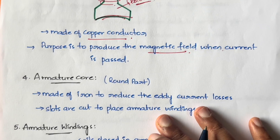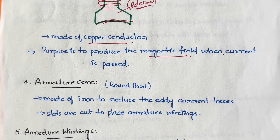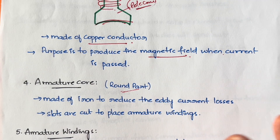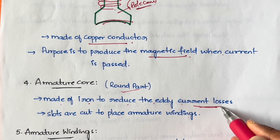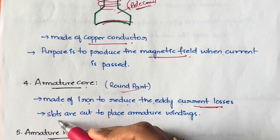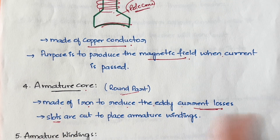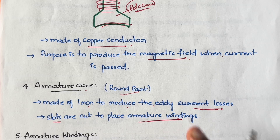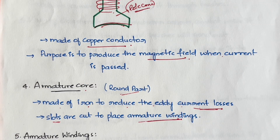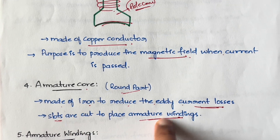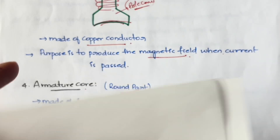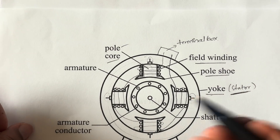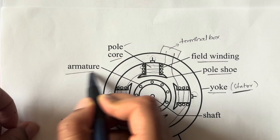Now let's see the center parts — the rotor parts. First is the armature core. The armature core is the round one in the center; it is made up of iron and it is used to reduce eddy current losses. In the armature core you will have some slots cut open where you can place the armature windings.